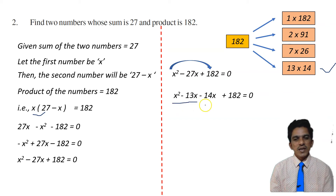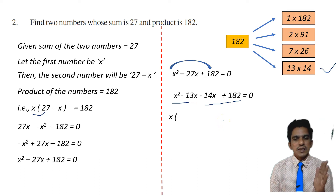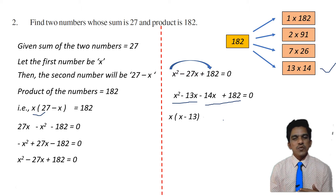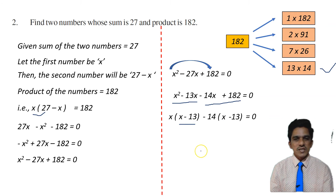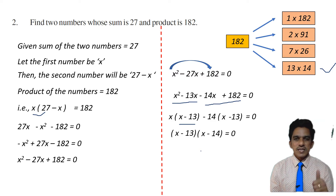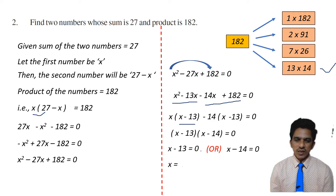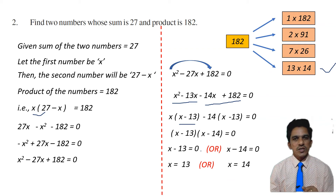Grouping: x squared minus 13x is one pair, minus 14x plus 182 is another pair. From x squared minus 13x, take out x: x(x minus 13). From minus 14x plus 182, take out minus 14: minus 14(x minus 13). So x minus 13 is the common factor, giving (x minus 13)(x minus 14) equals 0. Therefore either x minus 13 equals 0 or x minus 14 equals 0, which means x equals 13 or x equals 14.